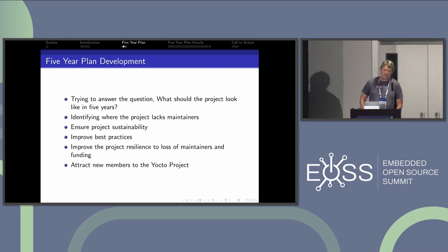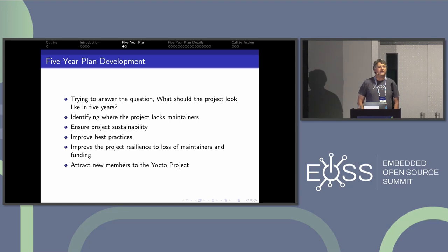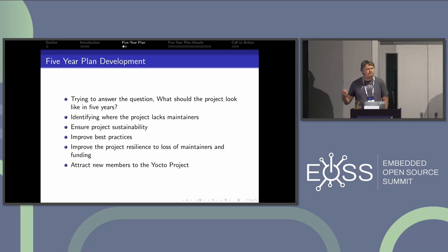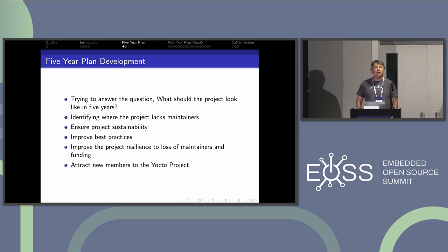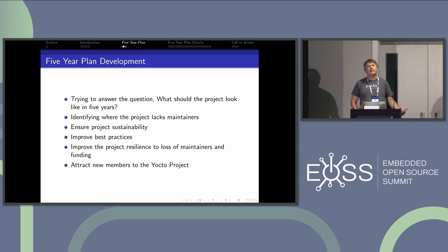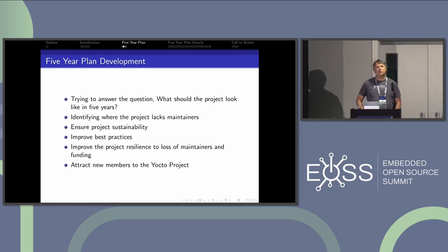We started a process at the advisory board level to answer the question: what should the project look like in five years? Historically, a lot of the work has been people scratching their own itches, contributing code as they can — it's not been very focused. We have more ideas than we have people to implement them. Some great tools are sort of bit rotting, and we're trying to improve the project's sustainability.